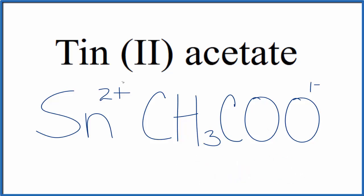So since the tin has a 2+, and we have this 1- here on the acetate ion, we're going to need two of these acetate ions for the charge to balance out. So we put a little 2 here, put the acetate ion in parentheses,